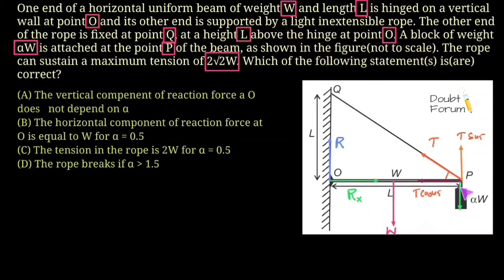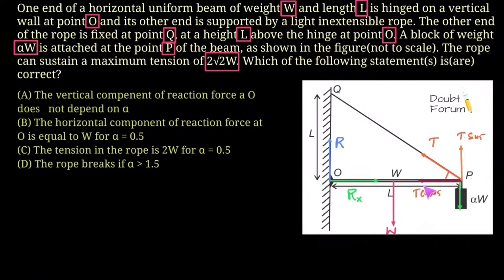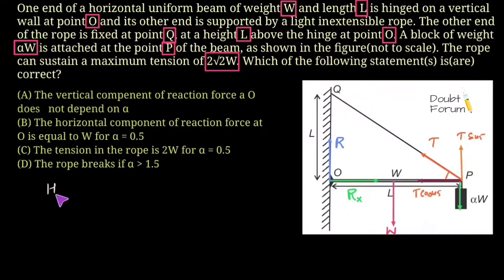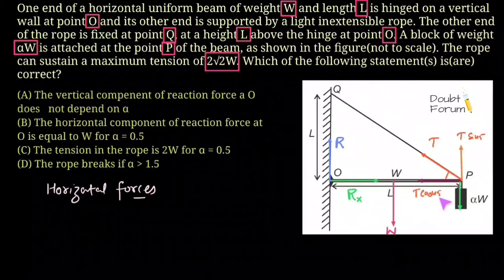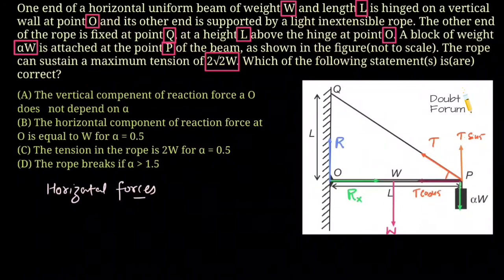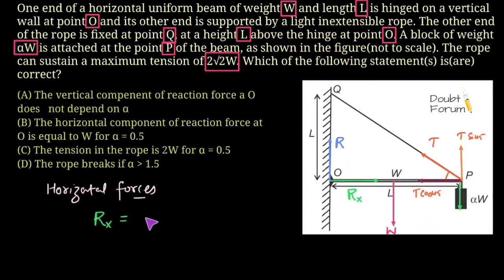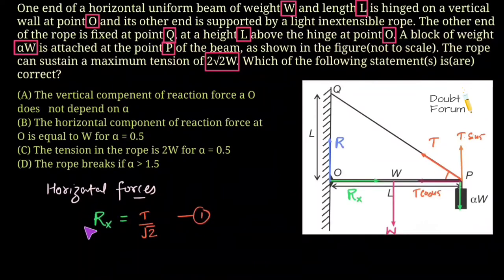These are all the forces acting on the system. Since there is no net motion horizontally or vertically, we balance forces in each direction. Balancing horizontal forces: there are two — Rx and T·cos45 — and they must balance each other. So Rx = T·cos45 = T/√2. This is Equation 1 for the horizontal component of the reaction.